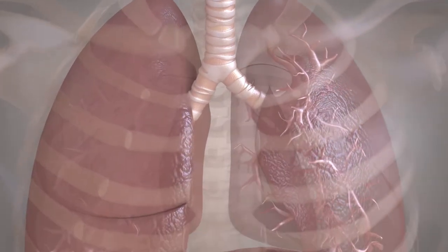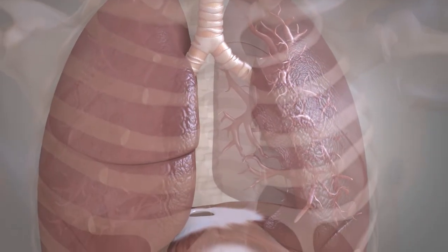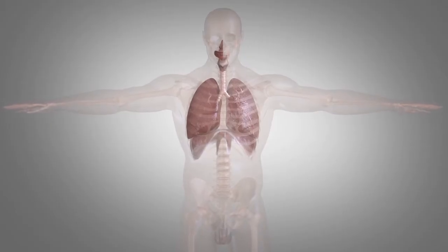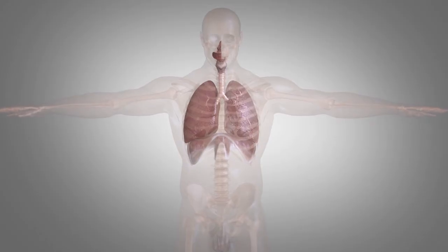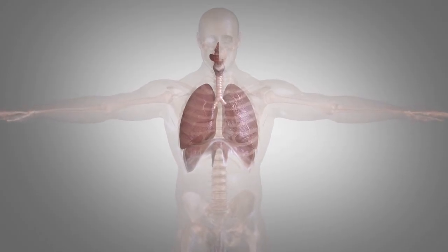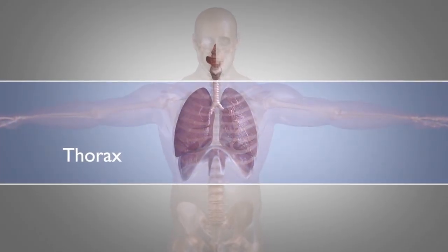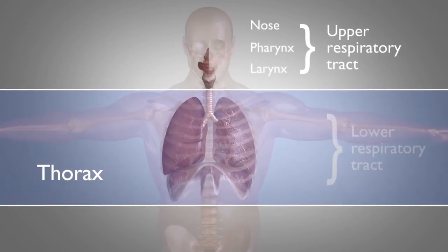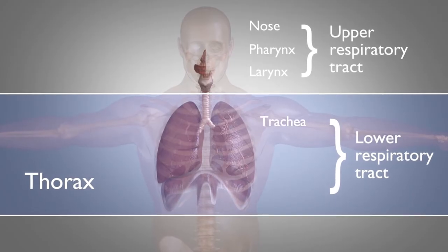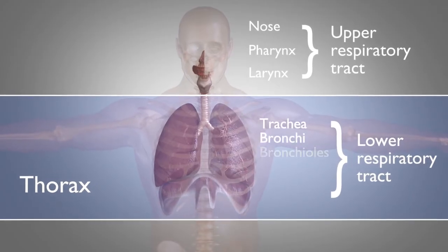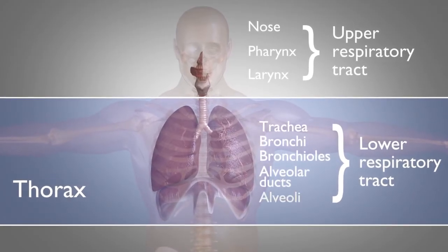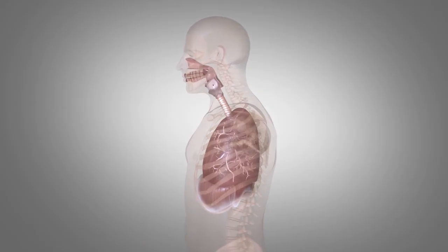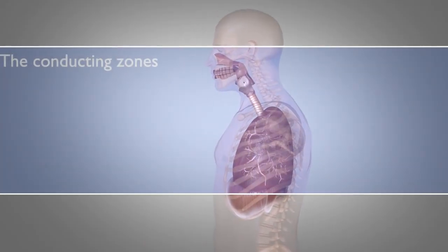It can be divided into two sections by two different classifications. An anatomical classification divides the system into the upper and lower respiratory tract based on the location above or within the thorax. The upper respiratory tract is therefore the nose, pharynx and larynx, and the lower respiratory tract is the trachea, bronchi, bronchioles, alveolar ducts and alveoli.